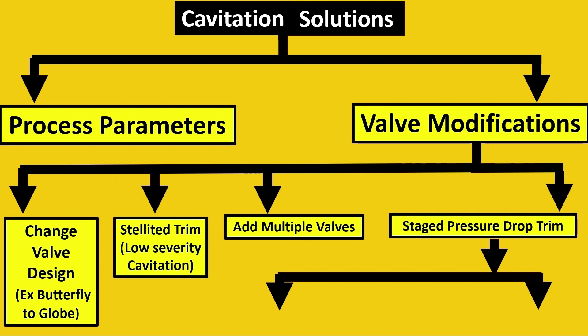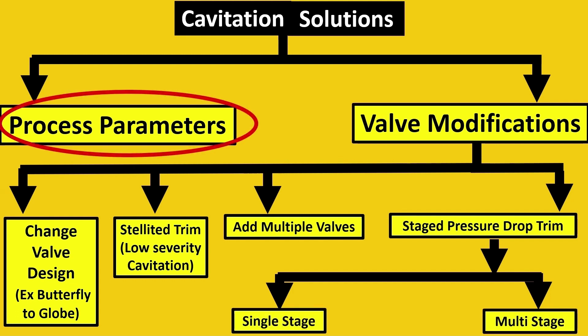Eventually, we'll see the process parameters in the next session of the video. Before that, if you want to learn about what I mean by low severity and high severity, when to use stellited trim and multi-stage trim, there is a term by ISA called cavitation index. Here's the link to the video so you can understand this parameter amazingly. Please subscribe. Next weekend, we'll learn about the process parameters and how you can prevent cavitation without spending a lot of money.